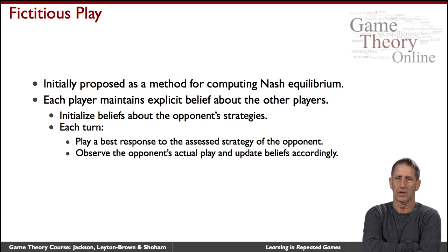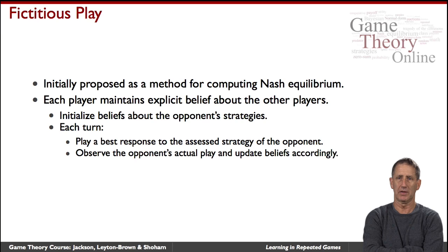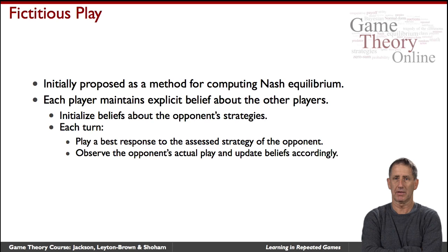The first example is perhaps the granddaddy of learning regimes in game theory, called fictitious play. It was not conceived initially — nor is it today viewed — as a realistic or effective learning method, but it contains many elements seen in more involved versions of learning. It was first presented as a heuristic for computing a Nash equilibrium in games. It turns out not to be a very effective procedure, but it is an interesting basic learning procedure.